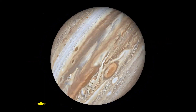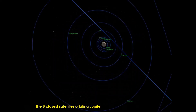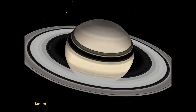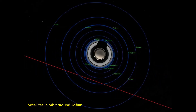This is Jupiter — it just looks like a marble. This is the photograph of the eight closest satellites orbiting Jupiter. And this is Saturn, showing the gaseous rings of Saturn along with the satellites orbiting it.